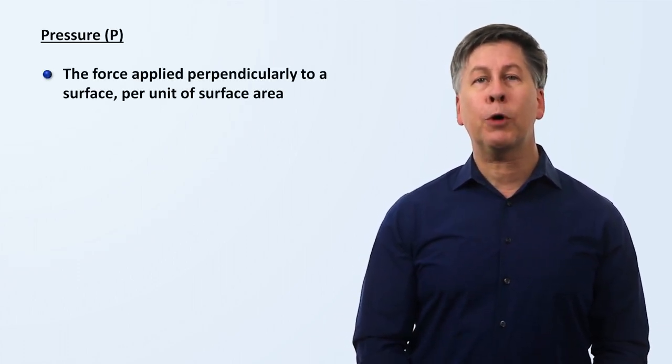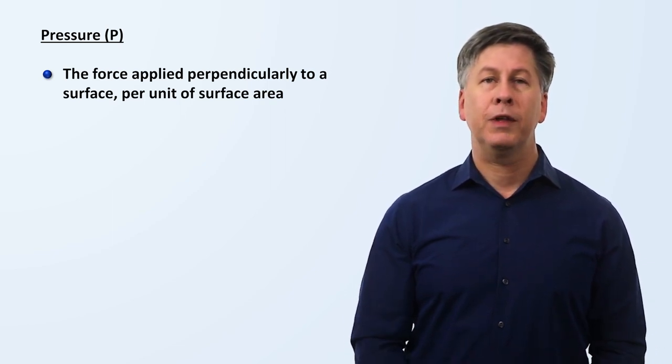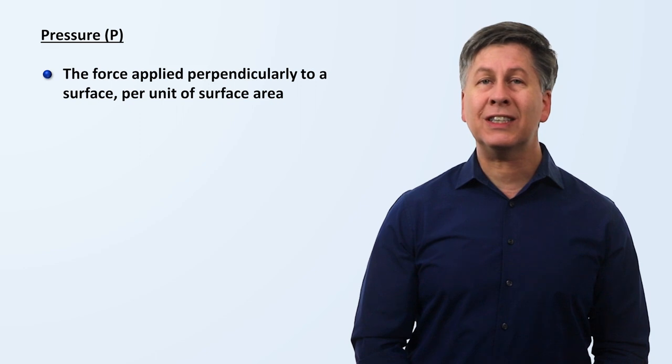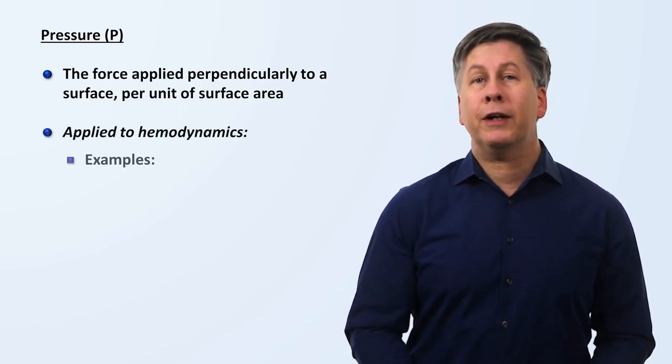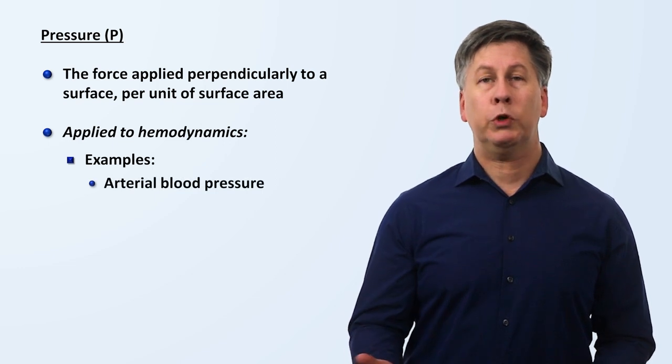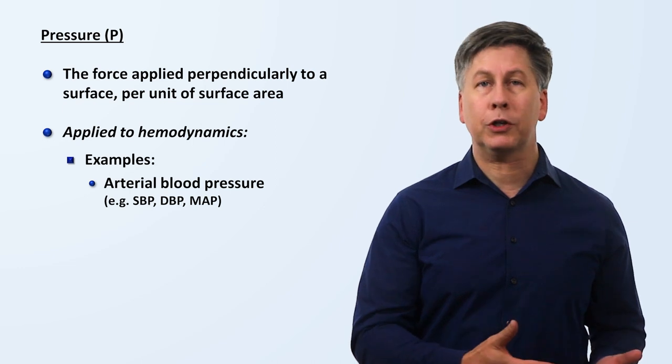I am going to start with pressure. From a physics perspective, this is defined as the force applied perpendicularly to a surface per unit of surface area. When we are specifically discussing pressure in hemodynamics, we could be referring to arterial pressure, which can be subdivided into systolic, diastolic, and mean arterial pressure.